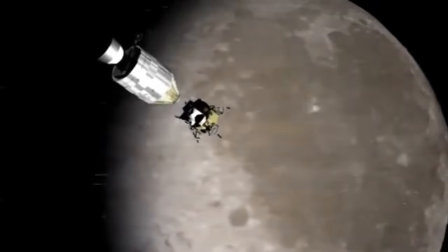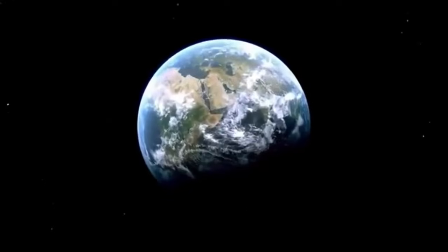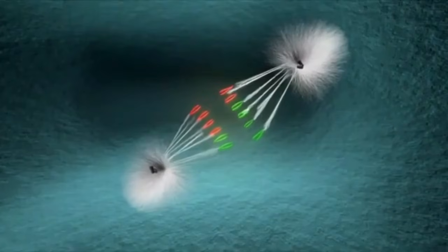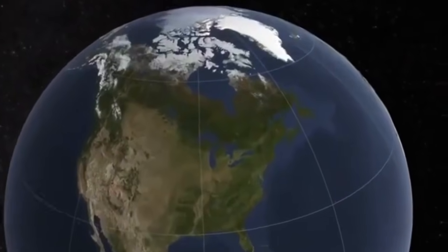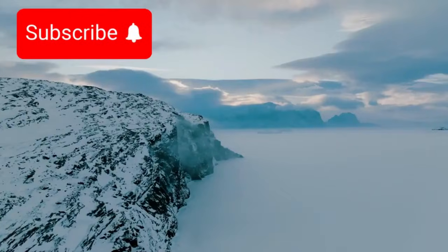What makes this even more incredible is that these discoveries are giving us clues about Earth's own ancient past. Scientists believe that billions of years ago, when Earth was young, it might have had a similar type of haze-dominated atmosphere.